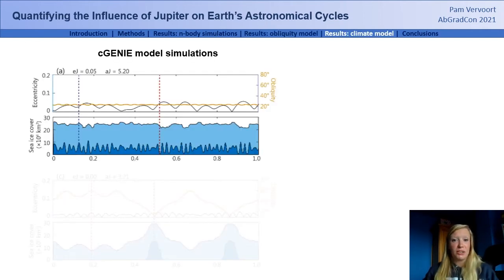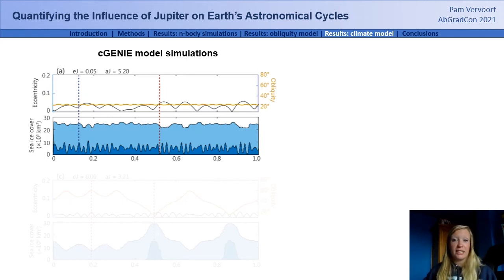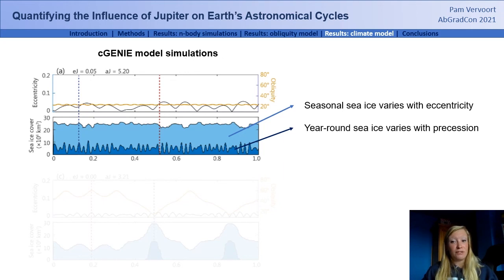We took a first attempt at simulating the transient climate evolution across a 1 million year time interval using a simple energy-moisture balance model coupled to a dynamic 3D ocean model and a sea ice model, while applying time-varying astronomical forcing. The figure shown here is the simulation most comparable to our modern solar system, where Earth's eccentricity cycles are roughly 100 kiloyears long and vary between 0 and 0.05, and obliquity cycles are roughly 40 kiloyears long. We find that seasonal sea ice varies mainly with eccentricity, whereas year-round sea ice varies with precession.